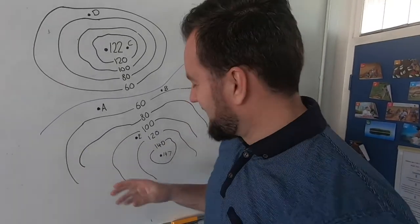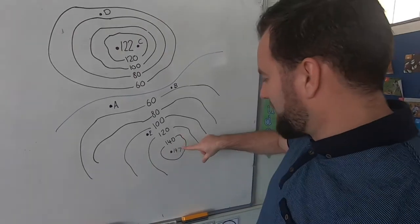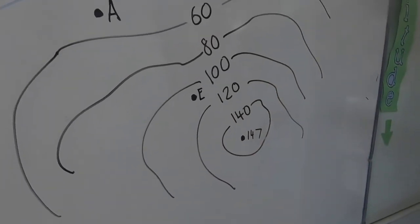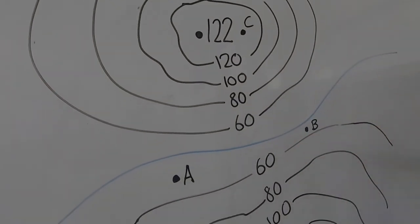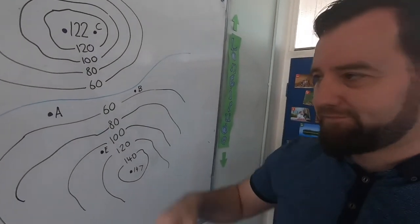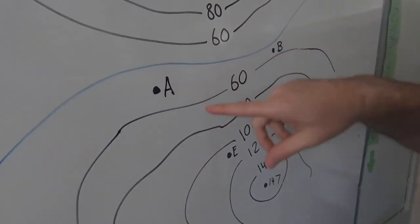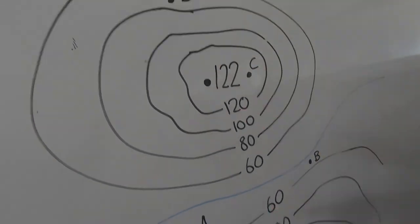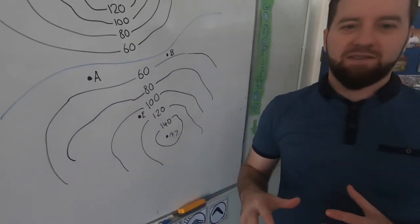Here we are at the whiteboard. We have a bit of a topographic map. We have one hill here with a spot height of 147, and one hill here with a spot height of 122. We can see the contour interval on our map is 20. I've got a water creek in the middle, and I've got five points: A, B, C, D, and E. So we're just going to talk about line of sight here.